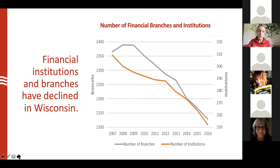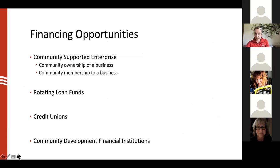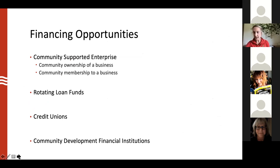When banks are less active in lending to small businesses, consider alternative financing. Community supportive enterprise could mean community ownership of a business - grocery stores, bars - where community members come together to sustain it. Community membership models can also help sustain a business. Alternative institutions like CDFIs are really integral to filling the financing hole for communities that need it.